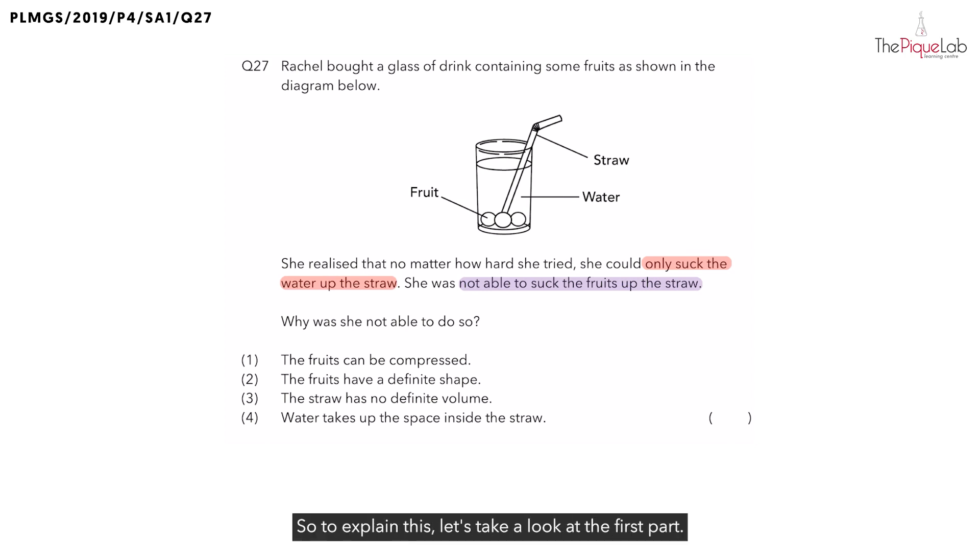So, to explain this, let's take a look at the first part. How come she was able to suck up the water? Remember, for water, what state of matter does it belong to? Is it a solid, liquid, or gas? Water is a form of liquid. And because it's a liquid, we know that liquids, they do not have a definite shape and they also have a definite volume.